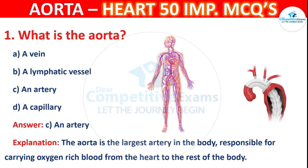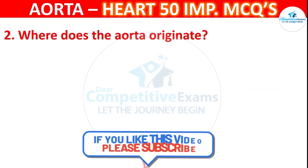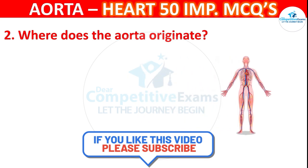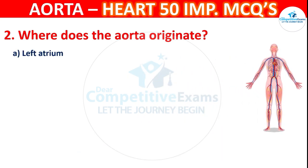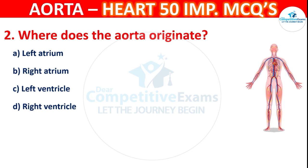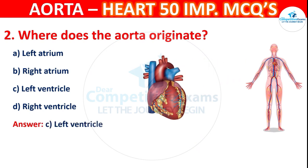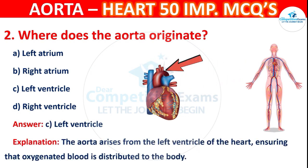Question number 2: Where does the aorta originate? Options are left atrium, right atrium, left ventricle, or right ventricle. The correct answer is C — left ventricle. The aorta arises from the left ventricle of the heart, ensuring oxygenated blood is distributed to the body.